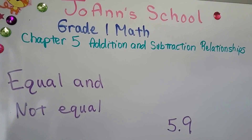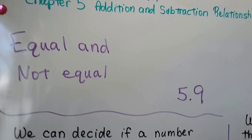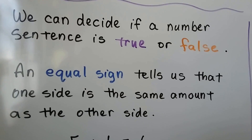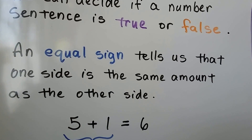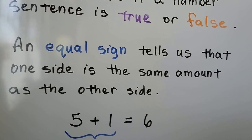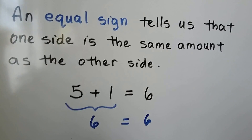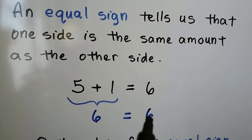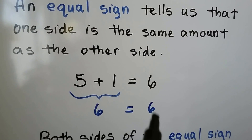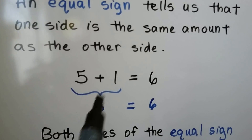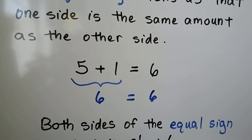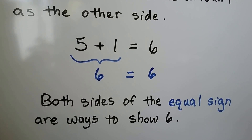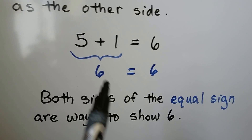Equal and not equal, lesson 5.9. We can decide if a number sentence is true or false. An equal sign tells us that one side is the same amount as the other side. 5 plus 1 — this side of the equal sign is a 6, and it says it equals 6, and this is a 6. Both sides of the equal sign are showing a 6. They're both ways to show a 6. We can show a 6 as the number 6 or as 5 plus 1.